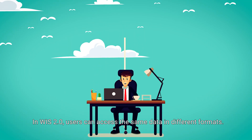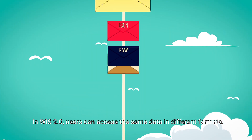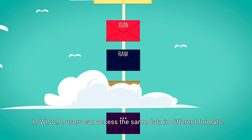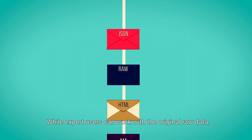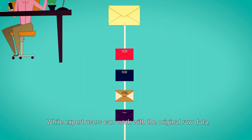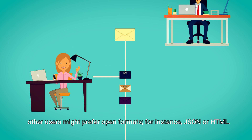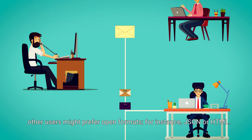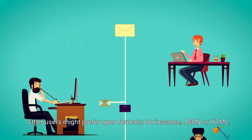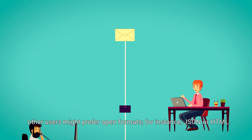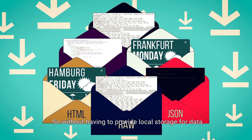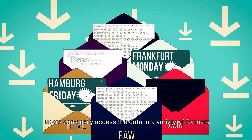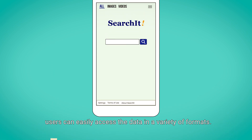In WISC 2.0, users can access the same data in different formats. While expert users can work with the original raw data, other users might prefer open formats, for instance JSON or HTML. Without having to provide local storage for data, users can easily access the data in a variety of formats.